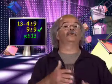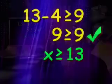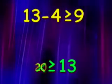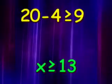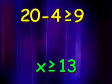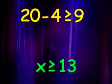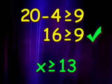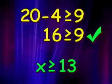But unlike an equation, we can't check every number in the solution. We can't substitute all the numbers greater than or equal to 13 to see if they work. We can try one number that is greater than 13. Let's use 20. 20 minus 4 is 16. 16 is greater than or equal to 9. So that indicates our solution is correct.